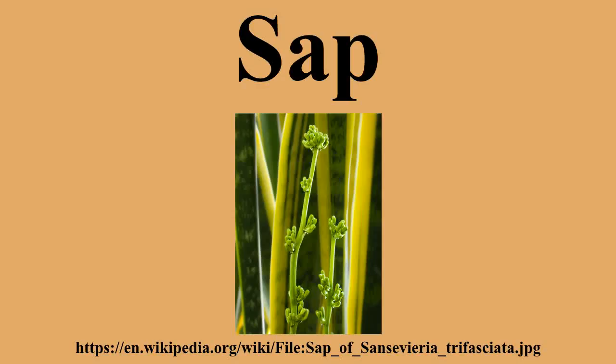Maple syrup is made from reduced sugar maple sap. The sap is often harvested from the sugar maple, Acer saccharum. In some countries, harvesting the early spring sap of birch trees for human consumption is common practice. The sap can be used fresh or fermented and contains xylitol.